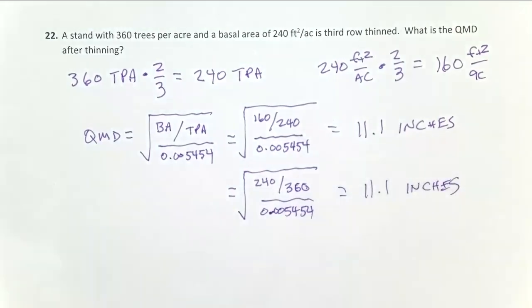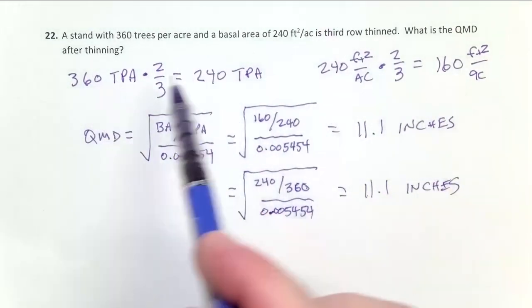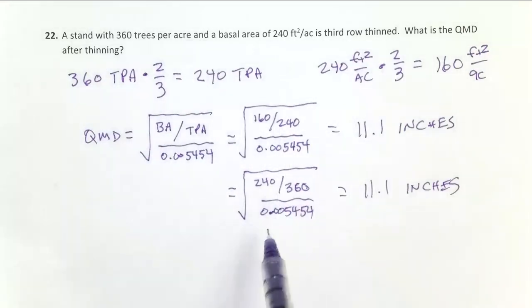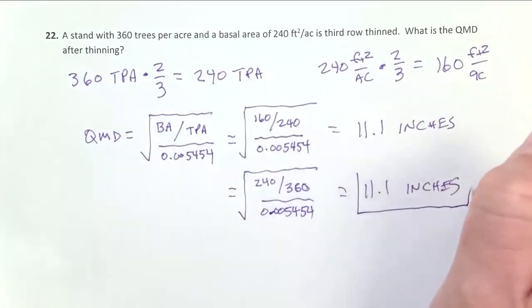So you could correctly do this problem without doing this step up here at all. You could just go straight and plug that in knowing it's not going to change. Calculate the pre-thin QMD. It's going to be the same as the post-thin QMD. So that's going to be our correct answer.